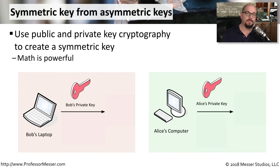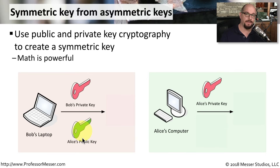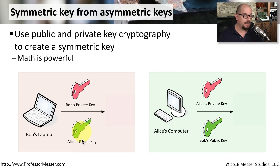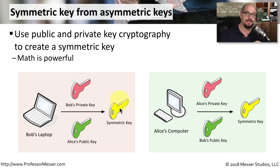We can also use public key cryptography to create a symmetric key known only by two individuals. Bob has his private key — nobody else has access to it. Alice has her private key — no one has access to that but Alice. Bob will combine his private key with Alice's public key, which is available to everyone. And Alice will combine her private key with Bob's public key, which is also available to everyone. The combination of Bob's private key with Alice's public key, and the combination of Alice's private key with Bob's public key, create exactly the same result: a symmetric key that is identical. So both Bob and Alice can communicate using symmetric encryption by simply combining their two keys and arriving at exactly the same symmetric key.